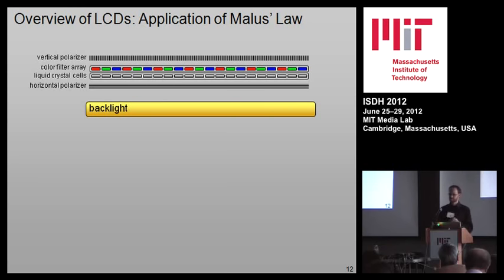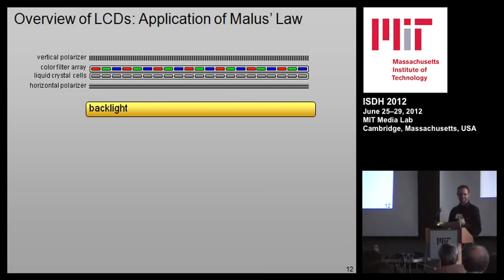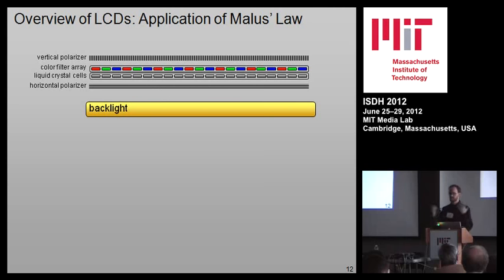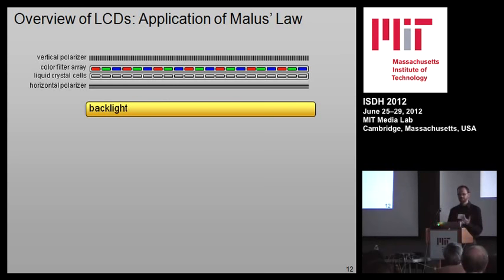When thinking about how to port this to an LCD — a spatial light modulator you can just buy off the shelf — it's really useful to understand how an LCD works. In an LCD we have a uniform backlight that emits light uniformly in every direction, a horizontal polarizer that converts randomly polarized light to linearly polarized light, and a liquid crystal, which for our purposes you can think of as a voltage-controlled linear polarization state rotator.